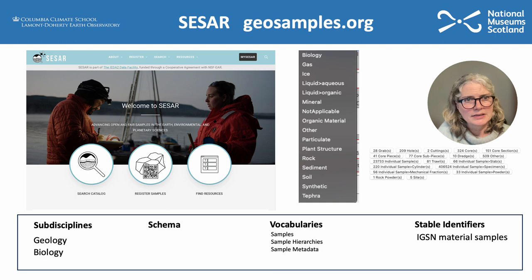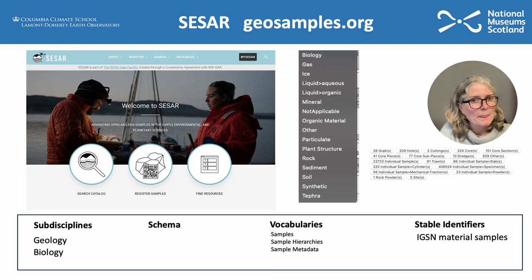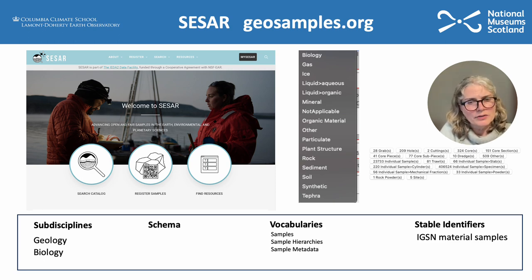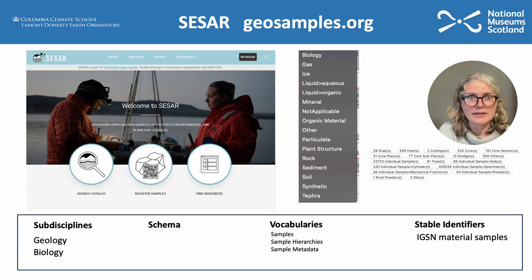Another portal is the SESAR portal, or otherwise geosamples.org. That aims to host a much wider variety of material samples — everything from specimens to samples of specimens. It includes biology, even gas, liquid, sediments, and tephra synthetic specimens. There are vocabularies developed within the portal to deal with samples, hierarchies, and metadata. This is a site that also generates its own stable identifier for each material sample record. They're called IGSN numbers, or International Geo Sample Numbers. My image below shows an example of all the different biological specimens that you will find in the portal.